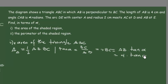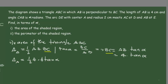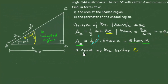Substituting into the area formula, the area of triangle ABC equals one-half times AB times BC, which is one-half times 4 times 4tan(α). Simplifying, this gives us the area of triangle ABC equals 8tan(α).